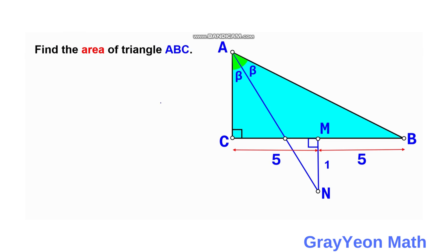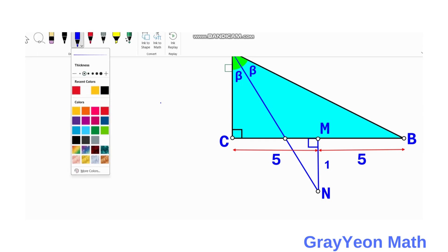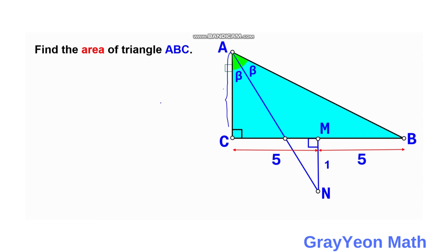Since we are concerned with finding the area, it is best that we look for segment AC, because the base is already given to be five units from C to point B. So if we get this height, we are on the easy way to find the area of this right triangle. I have added another point O at the intersection of AN and the longer leg.